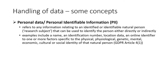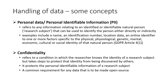Examples of personal data include a name, an identification number, location data, an online identifier, or any factors that could be physical, genetic, or cultural that could be linked to that person. A related concept is confidentiality, which refers to the condition in which a researcher knows the identity of a research subject but takes measures to protect that identity from being discovered by others.